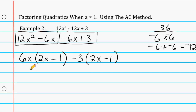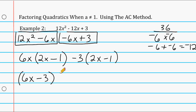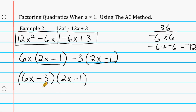We take the terms on the outside of each set of parentheses — 6x and negative 3 — and combine them into (6x − 3). Then we write the repeated inner expression (2x − 1) once. So the two factors that when multiplied produce 12x squared minus 12x plus 3 are (6x − 3)(2x − 1).